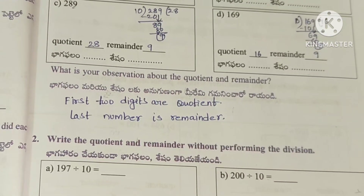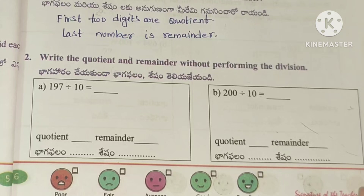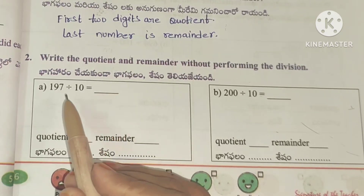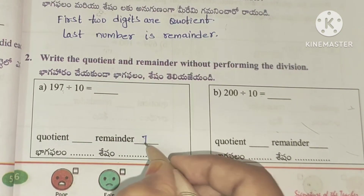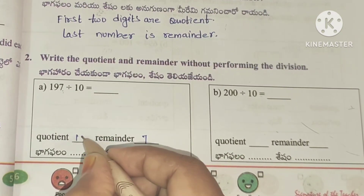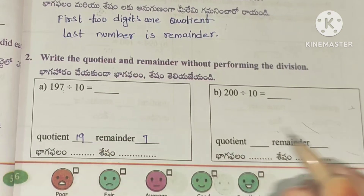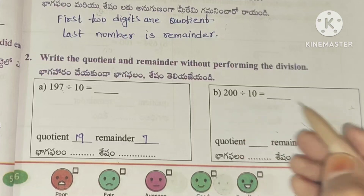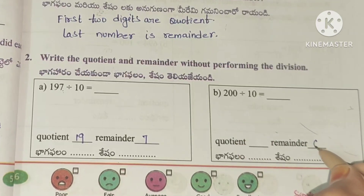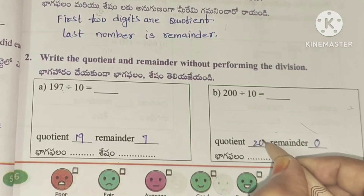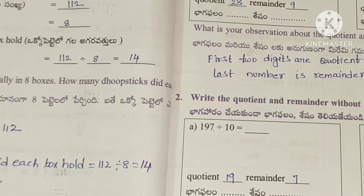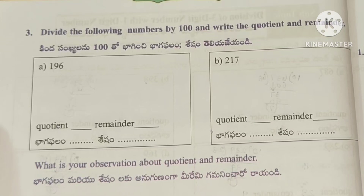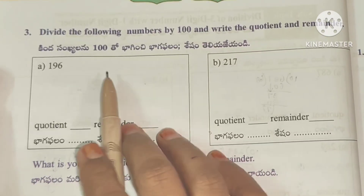The last number is the remainder, so we will try to find the quotient and remainder without performing the division. The last number is the remainder and the remaining part is the quotient. If the last number is 0, then the quotient is 20.